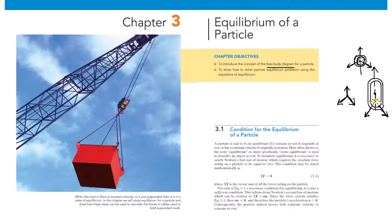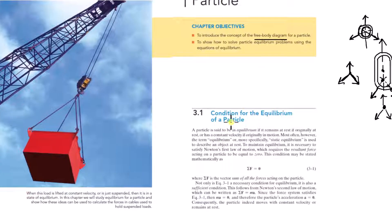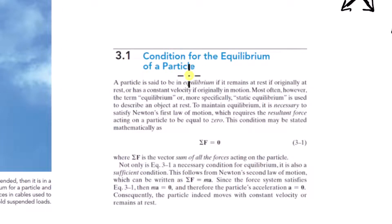You can still just take that point, isolate it, and do your free body diagram on the ring that way. The condition for equilibrium of a particle: a particle is said to be in equilibrium if it remains at rest — if originally at rest — or has a constant velocity if originally in motion. So if it's not accelerating, then it's in equilibrium.